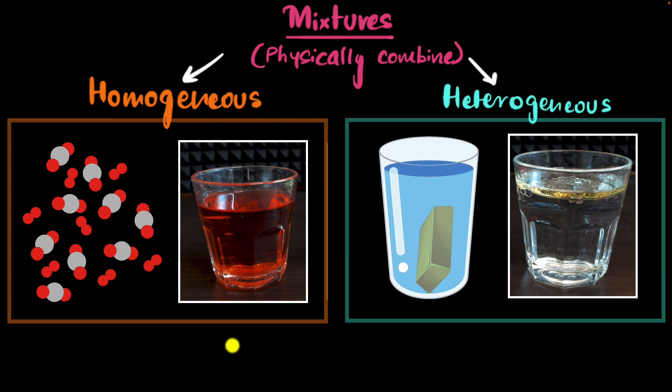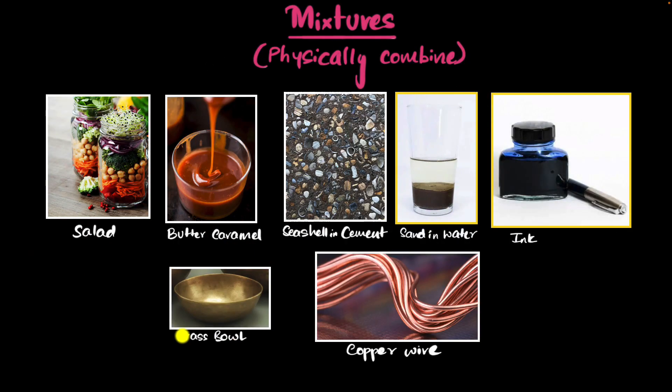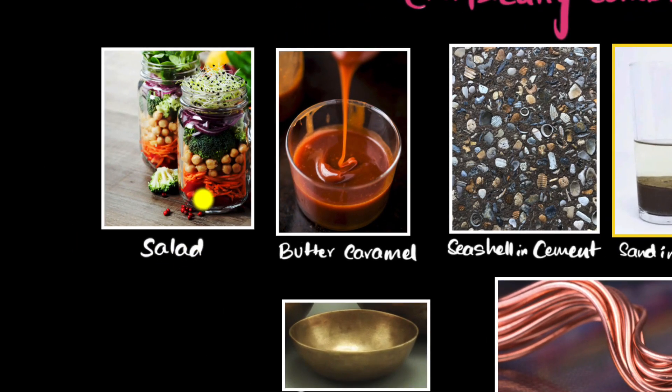All right, let's take some examples now. Why don't you pause the video? Go through each one of them and classify them as either homogeneous mixtures or heterogeneous mixtures. Pause and try. All right, let's look at salads first. I can clearly see the different options that are mixed together. I can clearly see their boundaries. So this is a heterogeneous mixture.